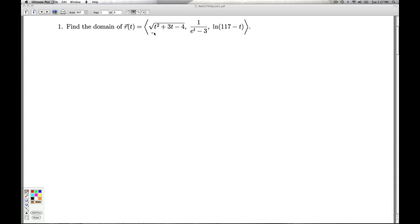So let's start off by looking at just the x component. I've got t squared plus 3t minus 4, all underneath the square root. So in order to keep this guy happy, I have to take the t squared plus 3t minus 4, and make sure it's greater than or equal to 0.